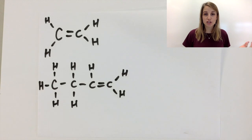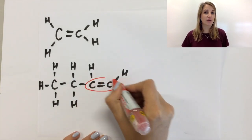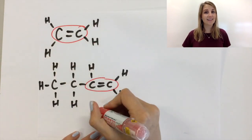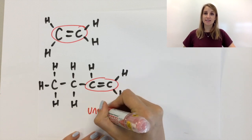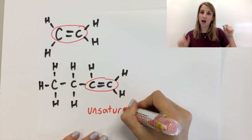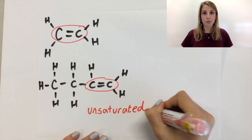Both of these we would describe as being unsaturated, and all alkenes are unsaturated just because they contain that carbon-to-carbon double bond.